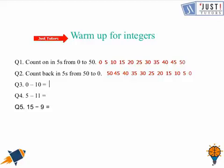The next one: 0 take away 10 is minus 10 as your answer. Then 5 take away 11 is minus 6. 15 take away 9, the answer is 6. If you have got the same answer, it's really wonderful.